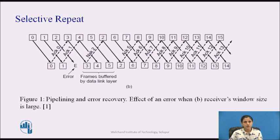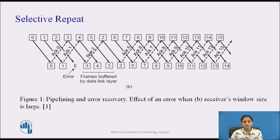In figure 1b, frames 0 and 1 are again correctly received and acknowledged, and frame 2 is lost. When frame 3 arrives at the receiver, the data link layer notices it has missed a frame. So it sends back a NAK for frame 2 but buffers frame 3. When frames 4 and 5 arrive, they too are buffered instead of being passed to the network layer. Eventually, the NAK for frame 2 gets back to the sender, which immediately resends frame 2. When that arrives, the data link layer now has frames 2, 3, 4, and 5, and can pass all of them to the network layer in the correct order, acknowledging all frames up to and including 5. If the NAK gets lost, eventually the sender will time out for frame 2 and will resend it.